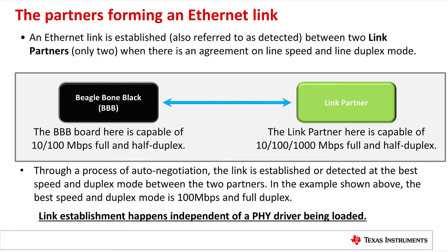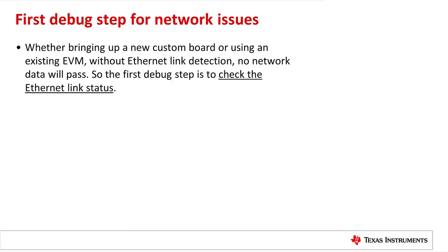Custom boards being brought up for the first time can have an issue here. There is no PHY driver necessary to establish a link. If the auto-negotiation is failing to establish a link it can be due to a hardware issue with the PHY on the custom board. Whether bringing up a new custom board or using an existing EVM, without an Ethernet link detection no network data will pass. So the first debug step is to check the Ethernet link status.